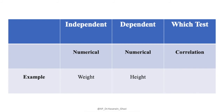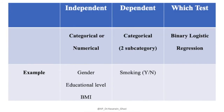If both the independent and dependent variables are numerical, we use correlation. For example, weight and height, or age and height — any two numerical variables where you want to know the association between them — we use correlation.